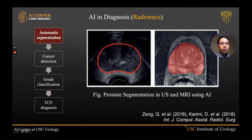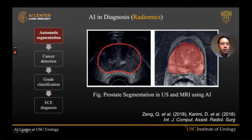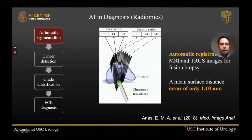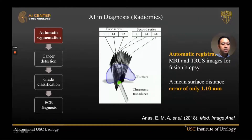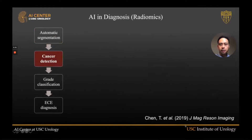In the realm of radiomics, here are a few examples of application. For automatic segmentation, MR-ultrasound fusion biopsies previously required ultrasound images to be manually merged with MR imaging — a labor-intensive process prone to error. Using AI-based radiomics, we are now able to reduce the error in merging these two data sets to approximately one millimeter.